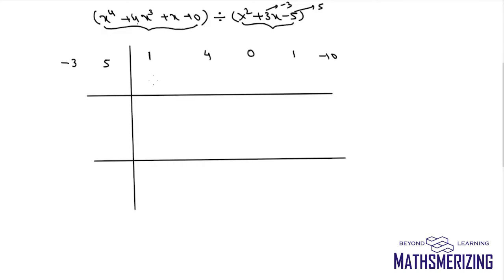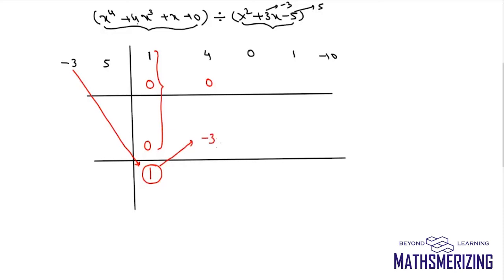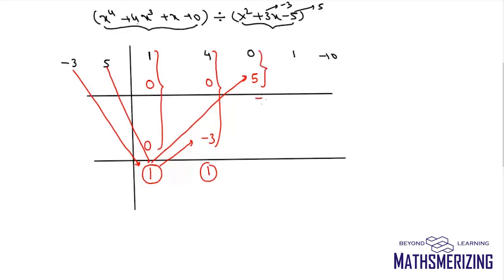First I put 3 zeros: 0, 0, and 0. Adding the first column gives 1. I multiply 1 with −3 and put −3 there, and multiply 1 with 5 and put 5 there. Adding: 4 − 3 = 1 and 0 + 5 = 5.